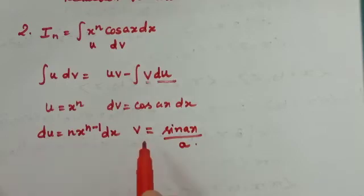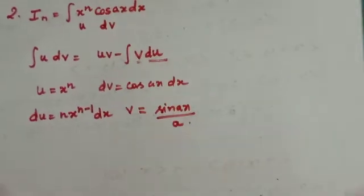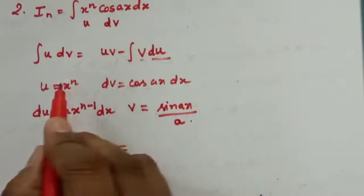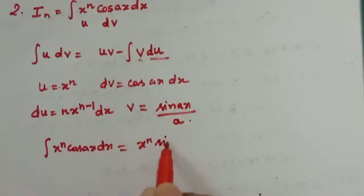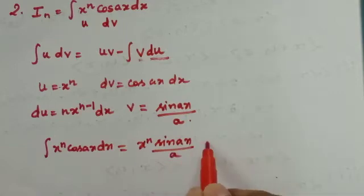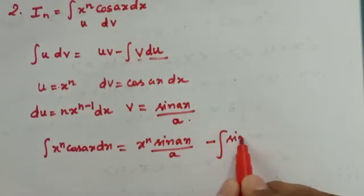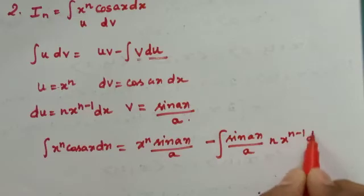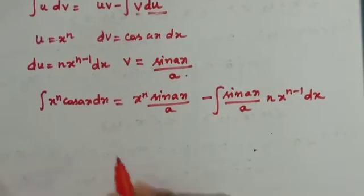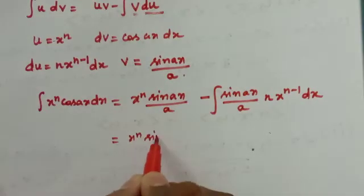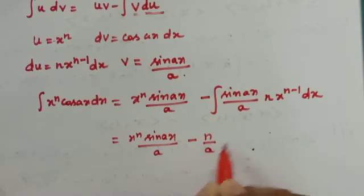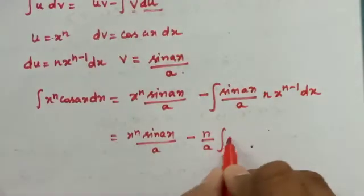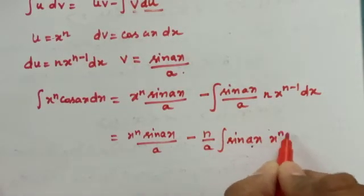So now we have du, v, and u dv. Putting into the formula: integral of x power n cos ax dx is equal to u into v, which is x power n into sin ax by a, minus integration of v (sin ax by a) into du (n into x power n minus 1 dx). So you will get x power n sin ax by a minus n by a, taking n and a outside as constants, into integral of sin ax times x power n minus 1 dx.